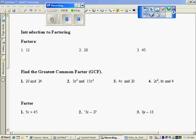Factors are items that are multiplied together. So the factors of 12, items that are multiplied together to make 12, are 1 and 12, 2 and 6, 3 and 4. So those six numbers are the factors of 12. The factors of 20 are 1 and 20, 2 and 10, 4 and 5.